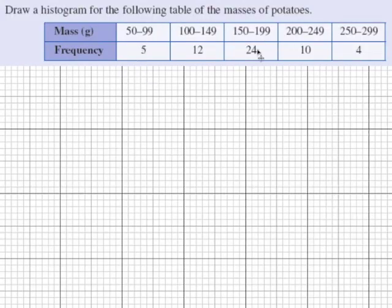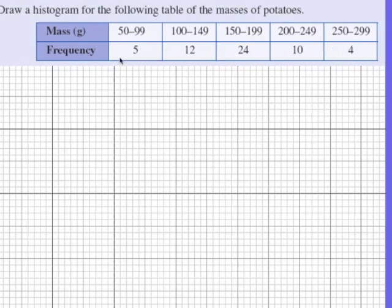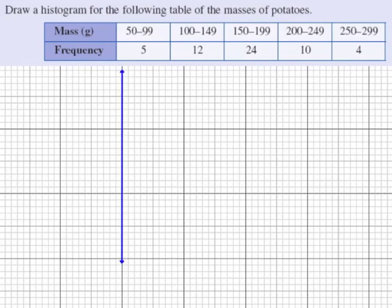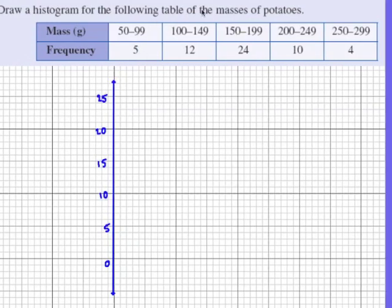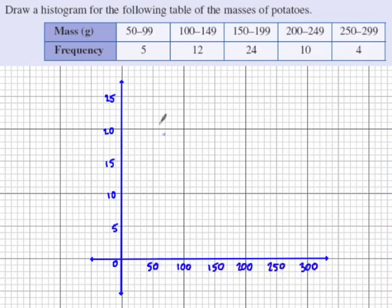Now let's have a go at drawing a histogram for the masses of some potatoes. And if you're drawing a histogram for your notes, make sure you've got some graph paper and a sharp pencil and a ruler. Don't just scribble a graph if you're making notes on this. So looking at our frequency scale, this is going to be the vertical axis, we need to go up to 24. So I'm going to go up in 5s. And then our horizontal scale needs to go up to 300. So I'm going to go up in 50s. This horizontal scale is the mass in grams and our vertical scale is the frequency.